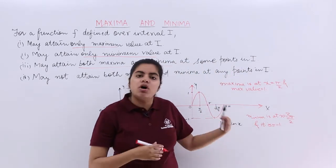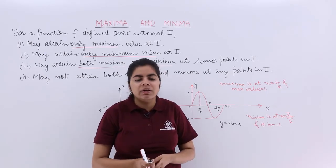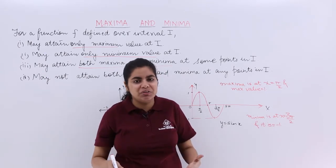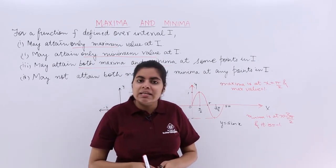So sin x or similarly cos x is such kind of a graph. One example of such kind of a graph which has both maxima and minima.